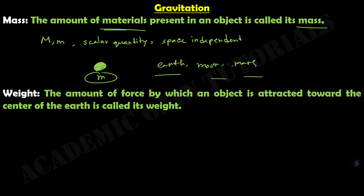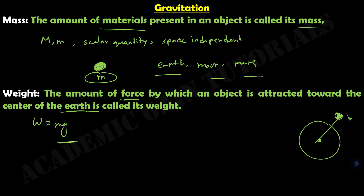And what is weight? Weight is the amount of force by which an object is attracted towards the center of the Earth — that is called its weight. We represent weight as W, and the formula is W equals M times G. With a change in the value of G, the weight of an object changes, so weight is not space independent — it is space dependent.